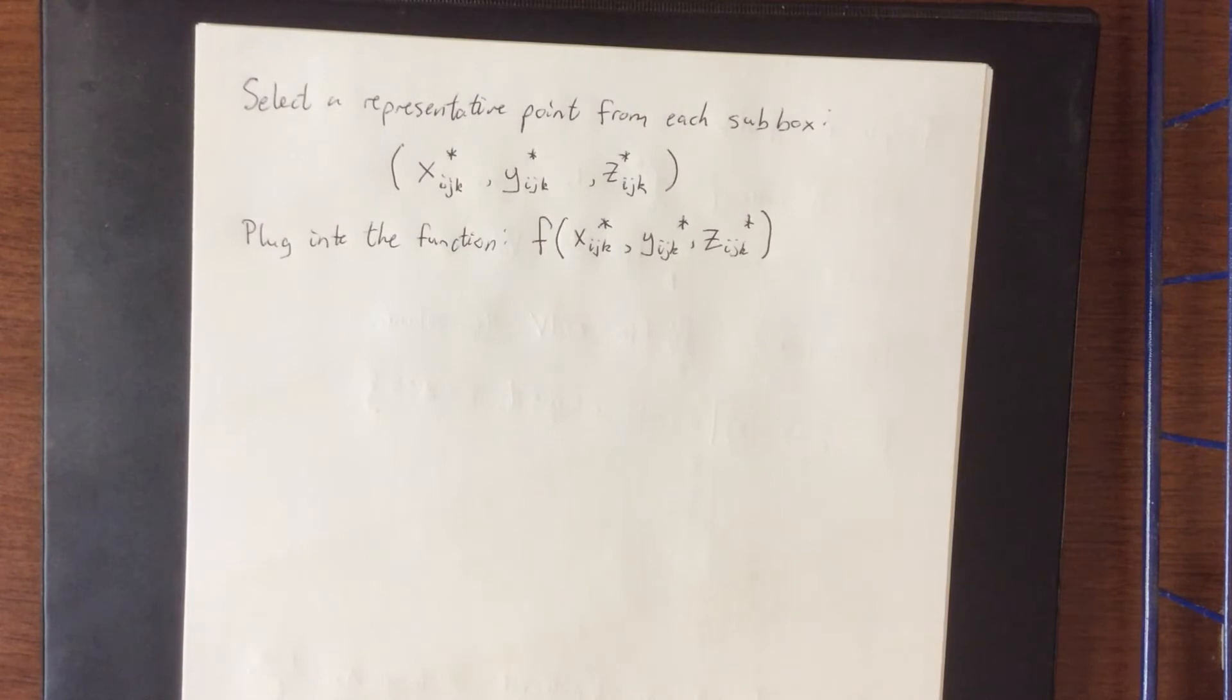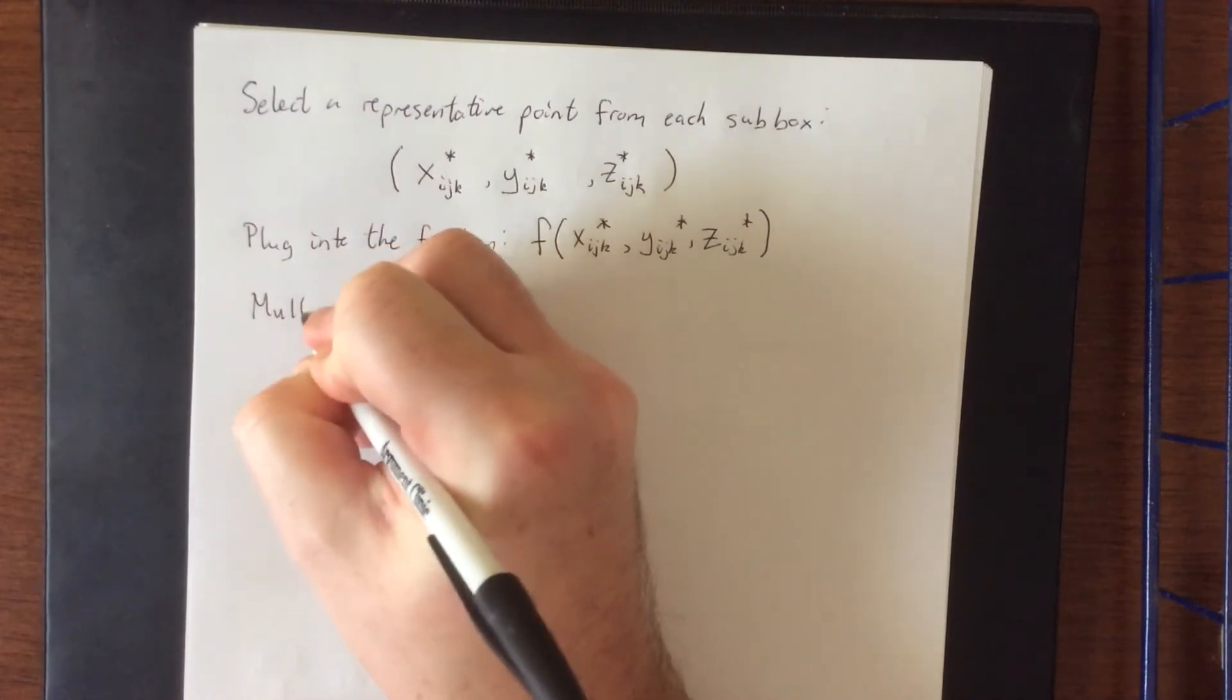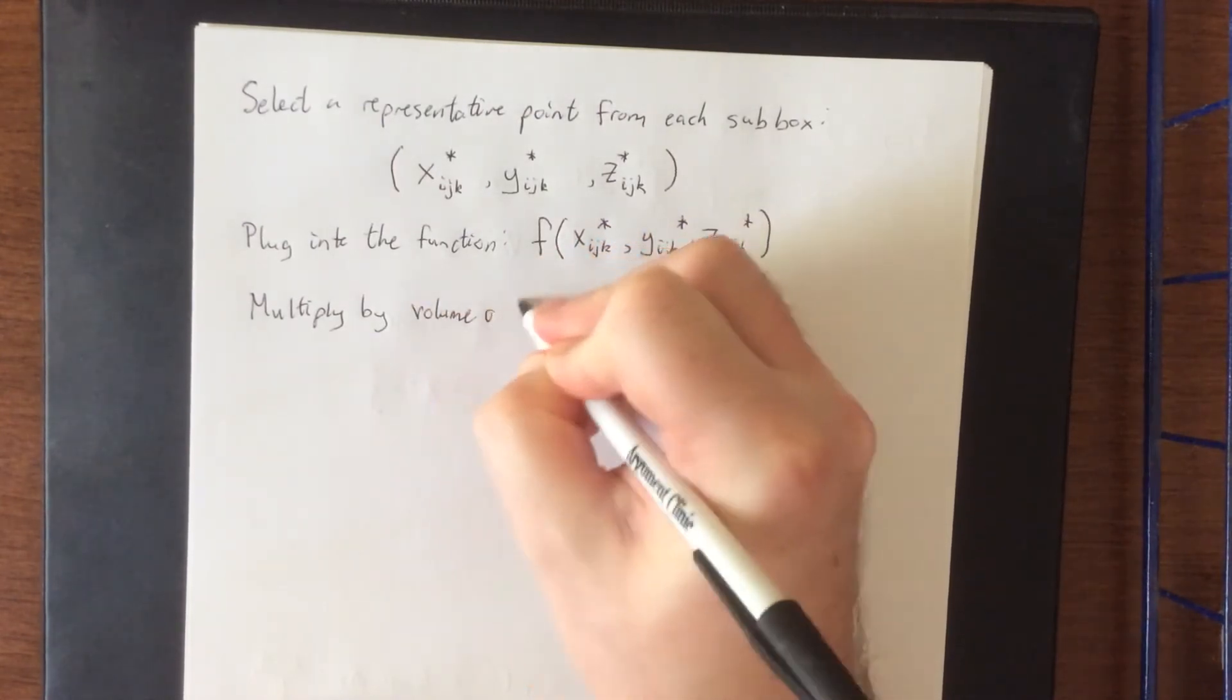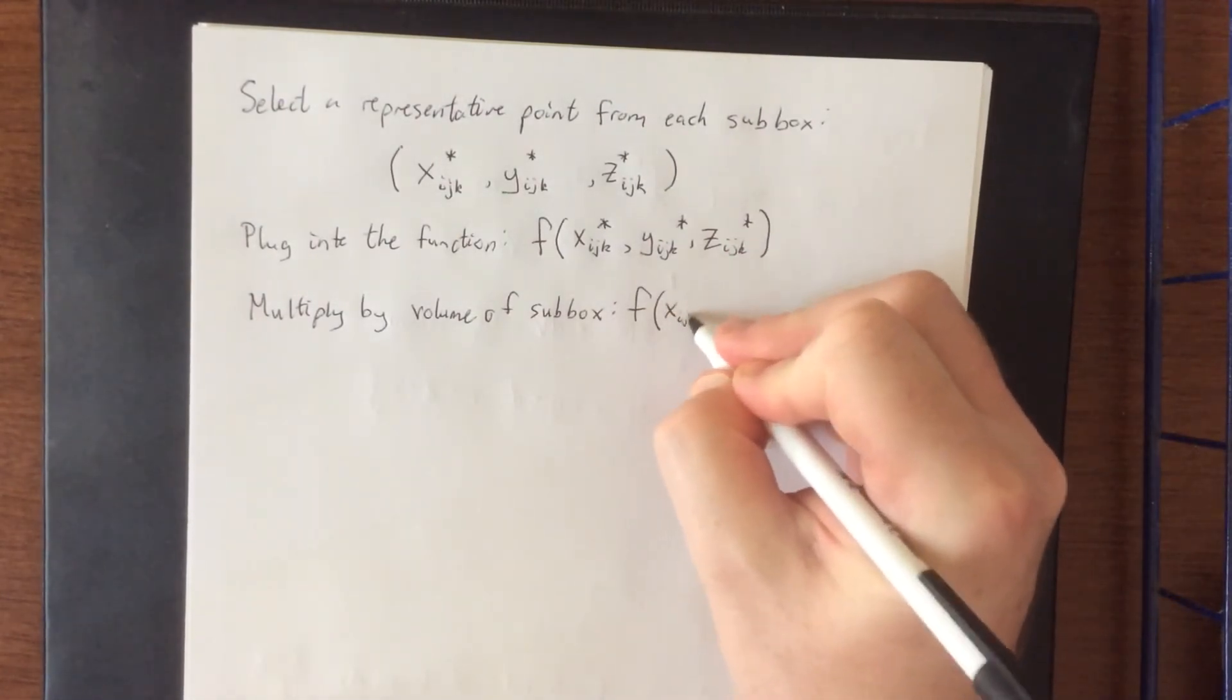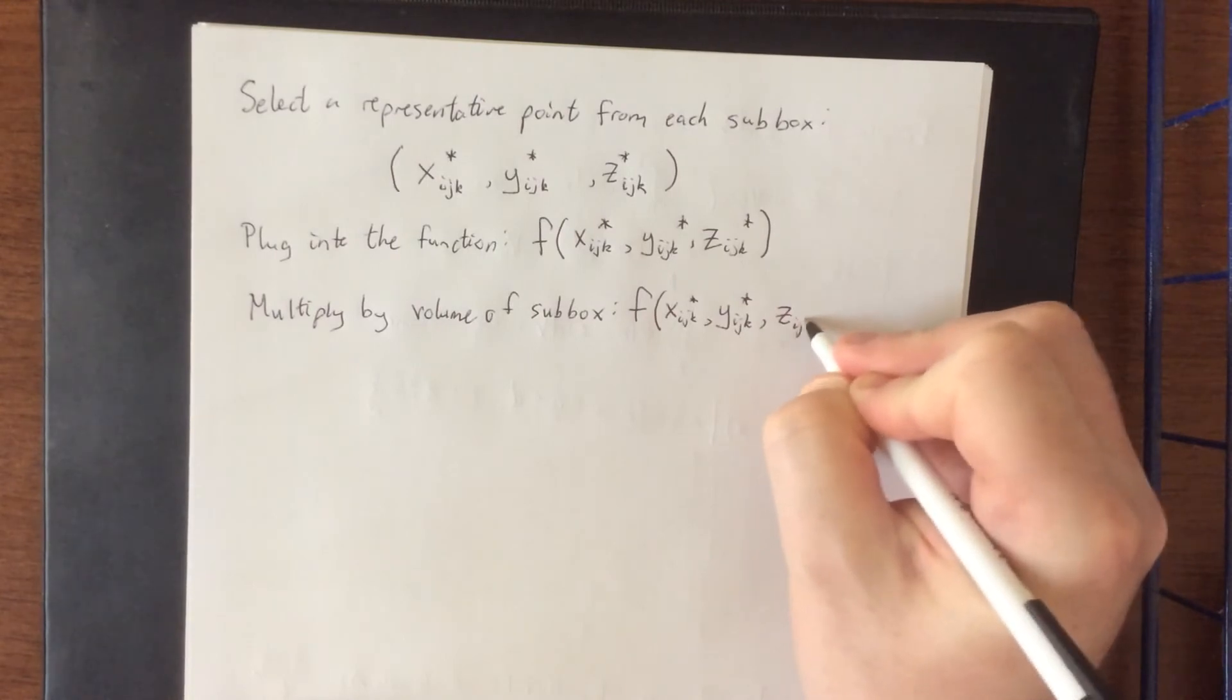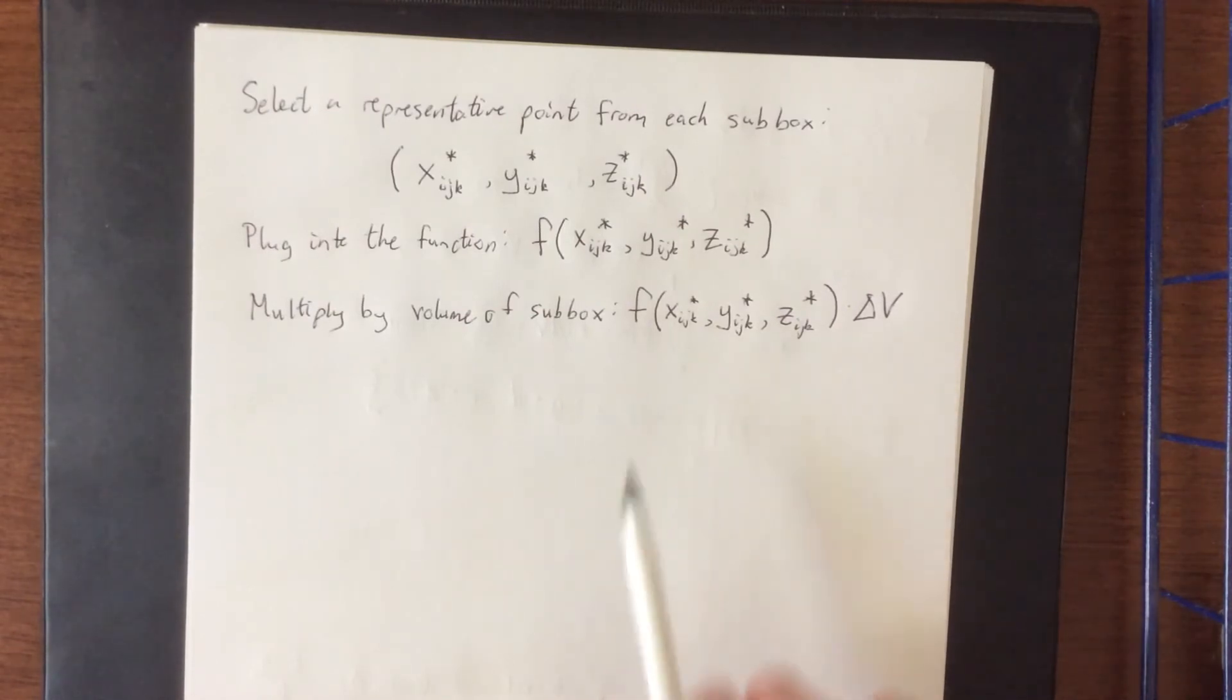So essentially what we have here is, if we were to compare this to the definite integral, plugging this into the function would be giving a height to a sample rectangle that we're creating. If we did this for a double integral, this would be giving us a height for the sub rectangle that we were using and calculating a volume. Here it's a little more confusing because we're going to multiply by the volume of the sub box. And what this does is it approximates the hypervolume associated with this sub box, the four-dimensional quantity that we're calculating here.